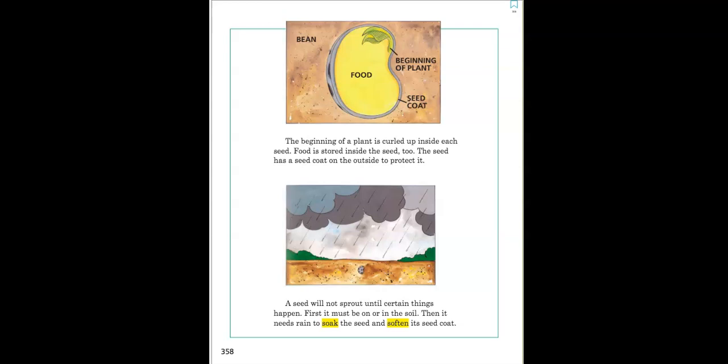A seed will not sprout until certain things happen. First, it must be on or in the soil. Then it needs to rain, needs rain to soak the seed and soften its seed coat.